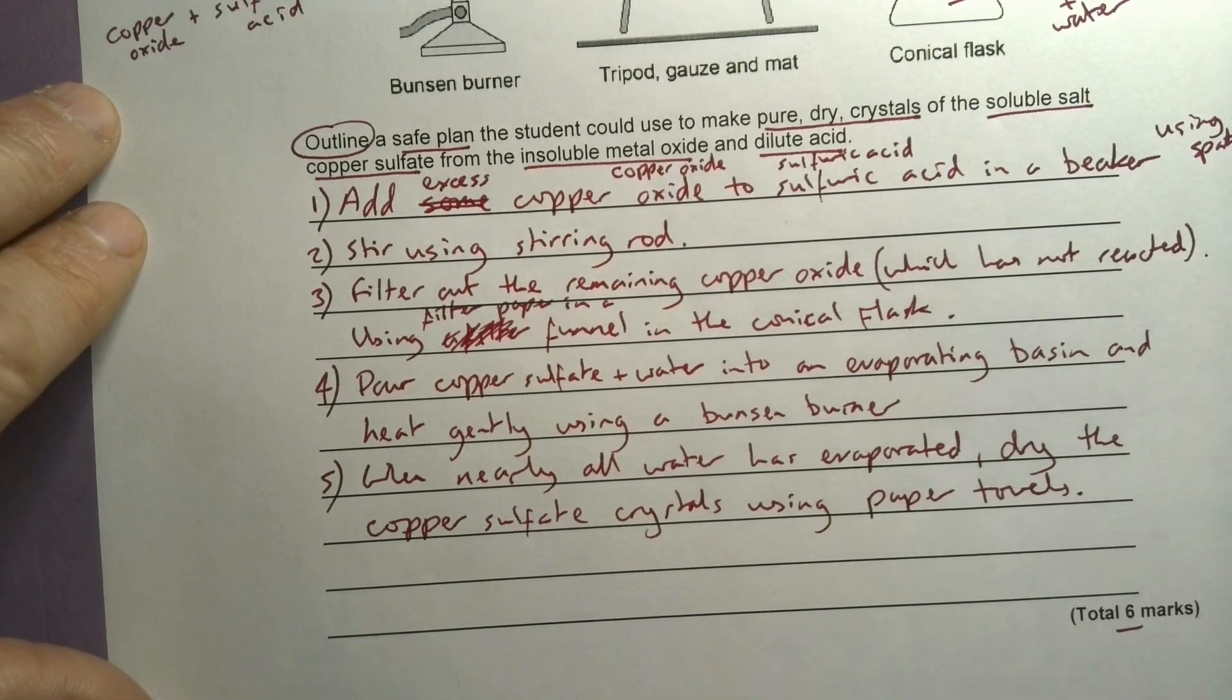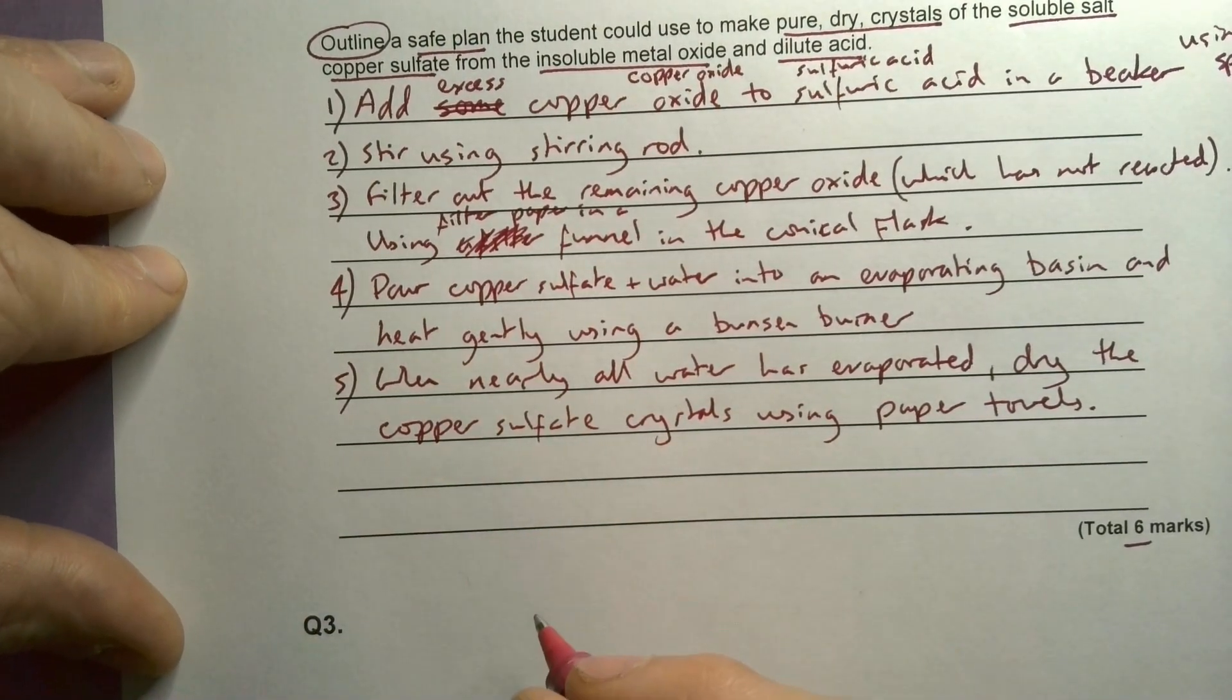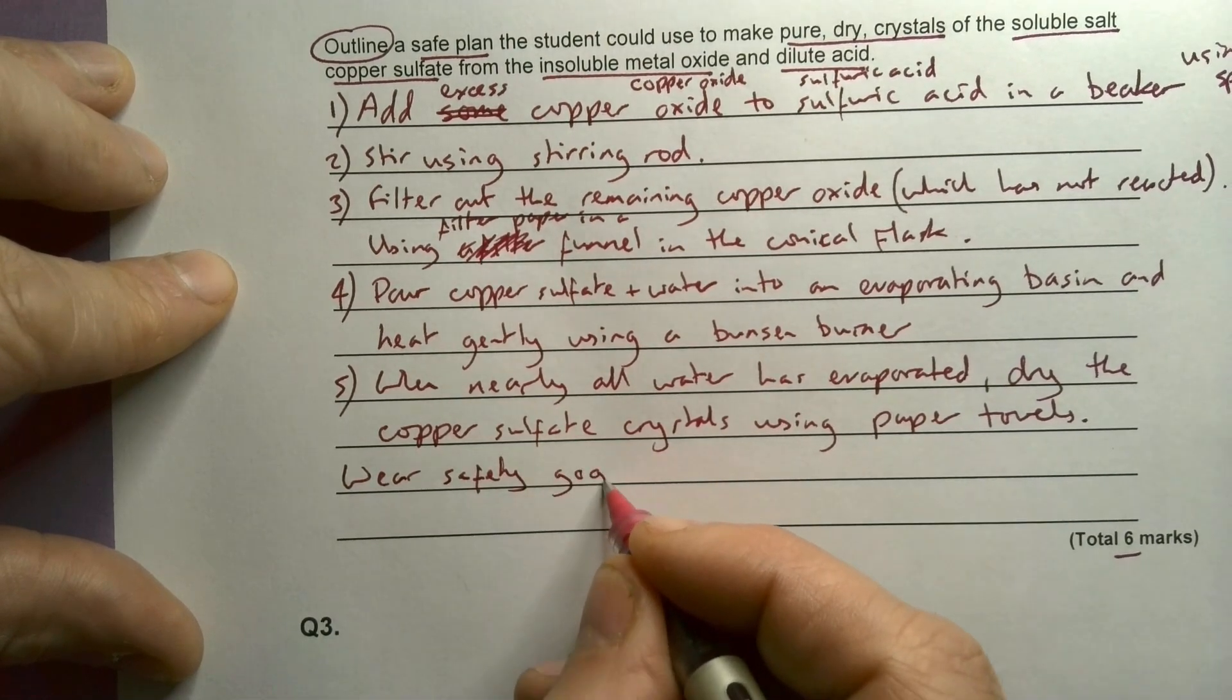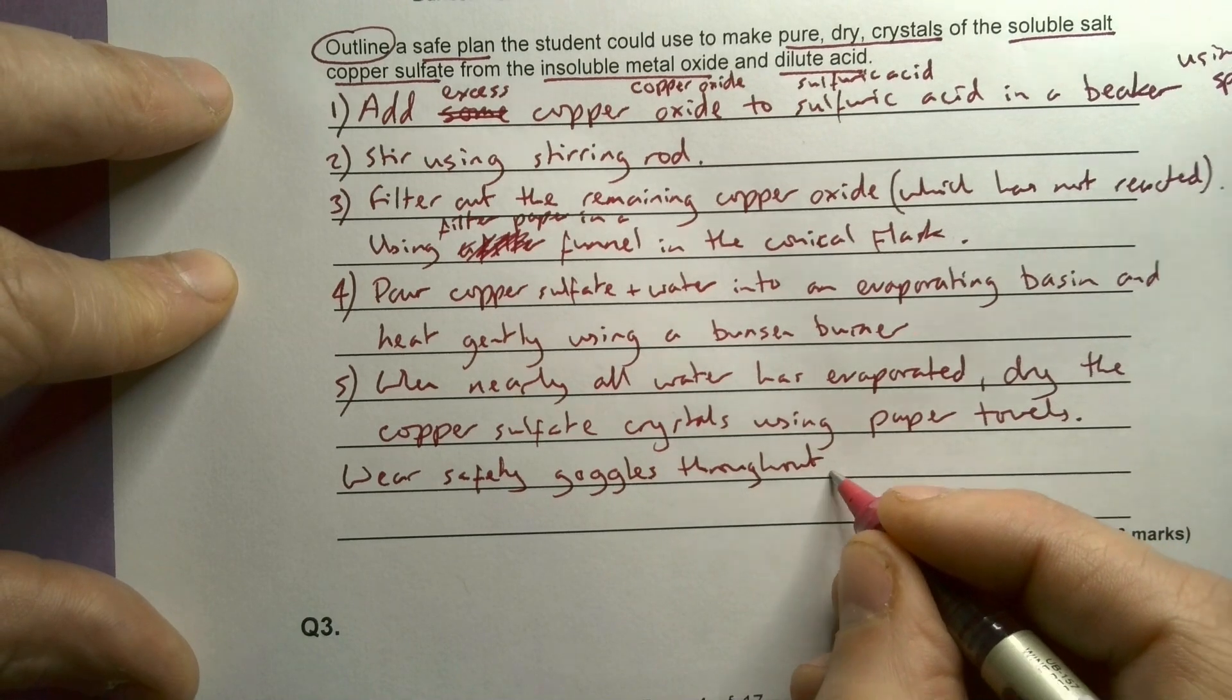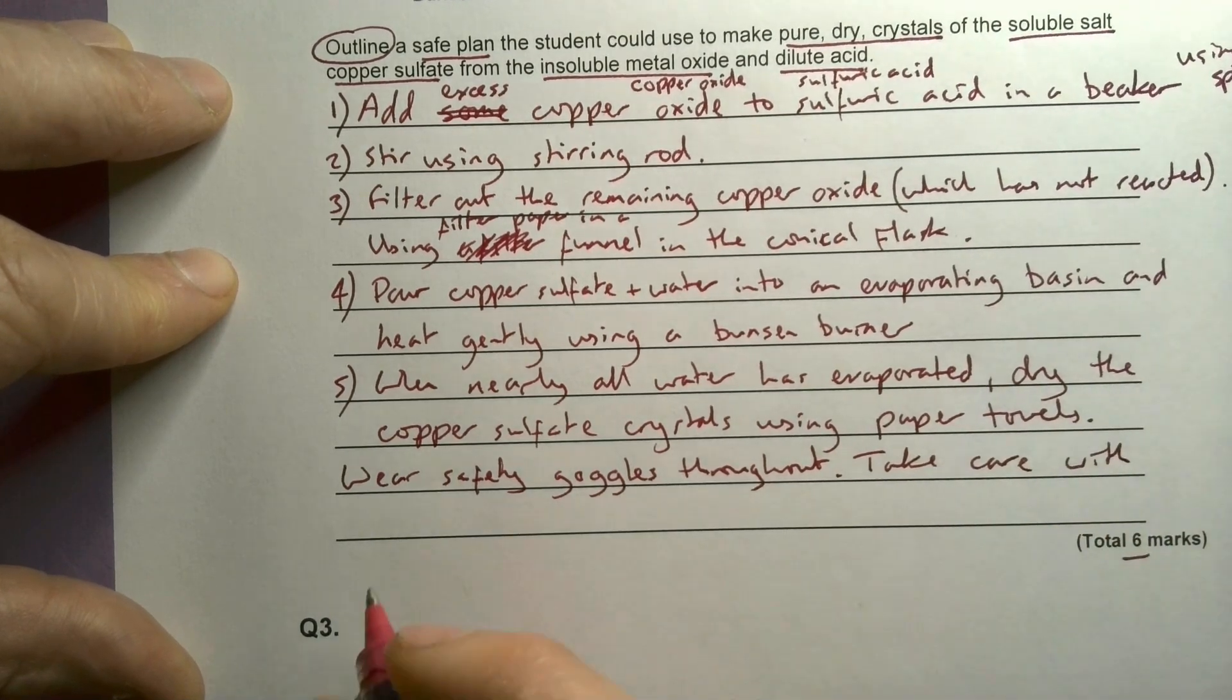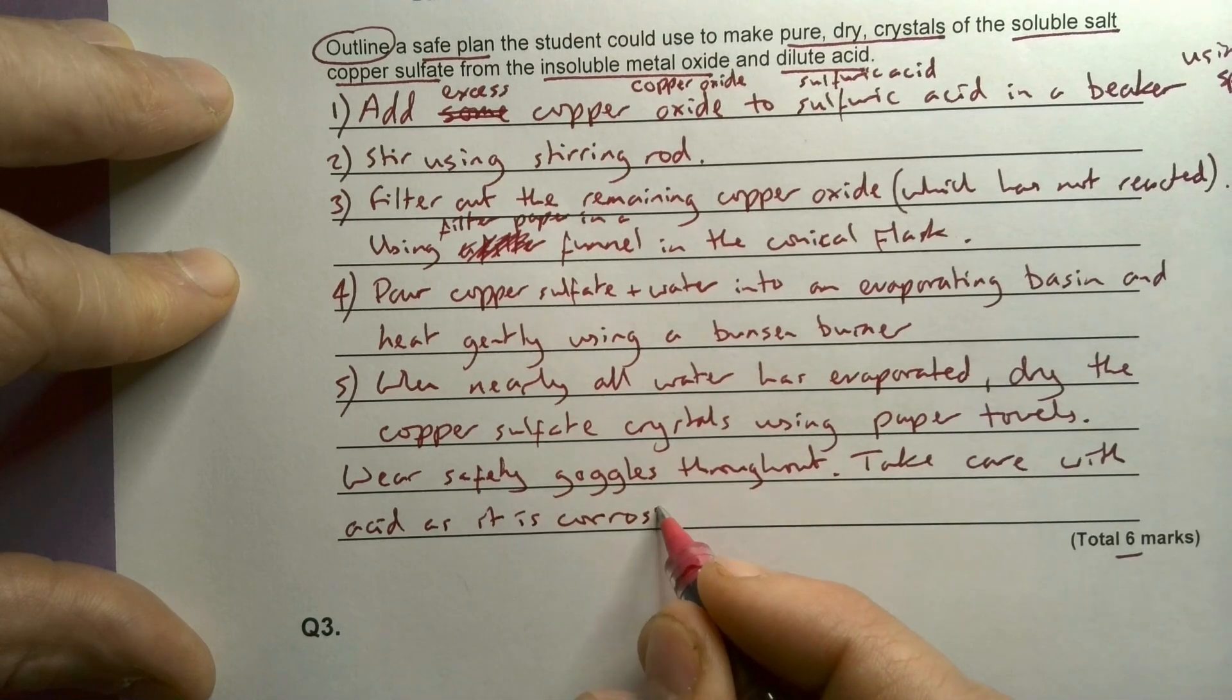I've got one more thing as well I haven't mentioned yet. And that's the safe plan. So whenever I do this, I've got to make sure I wear safety goggles. So wear safety goggles throughout. And take care. So with acid. As it's corrosive.